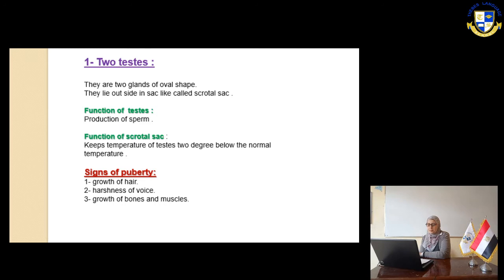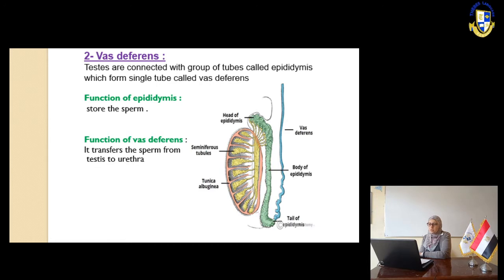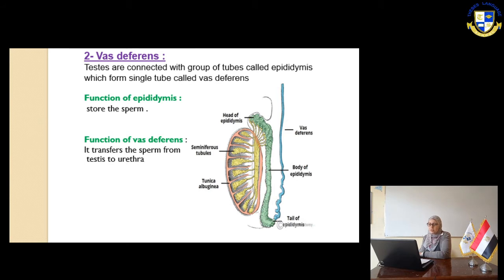The signs of puberty in males include growth of hair, harshness of the voice, and growth of bones and muscles. Slide number 5. The testes are connected with a group of tubes called the epididymis, which form a single tube called the vas deferens. The function of the epididymis is to store the sperm. The function of the vas deferens is to transfer the sperm from the testes to the urethra.